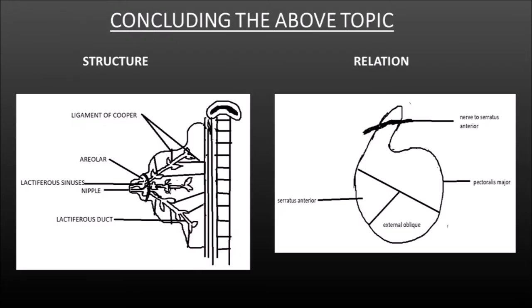Now we will be comparing the structure and the relation using the diagram. On the left side of the diagram, you will see the mammary gland showing the ligament of Cooper dividing the gland into 10 to 15 lobes, the nipple, the areola, lactiferous sinuses and the lactiferous duct. On the right, you will see the deep relations of the mammary gland and its tail, including the pectoralis major in the medial two-thirds, serratus anterior in the lateral one-third, and external oblique in the inferomedial quadrant.